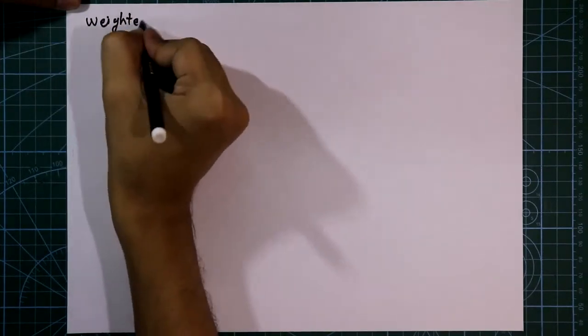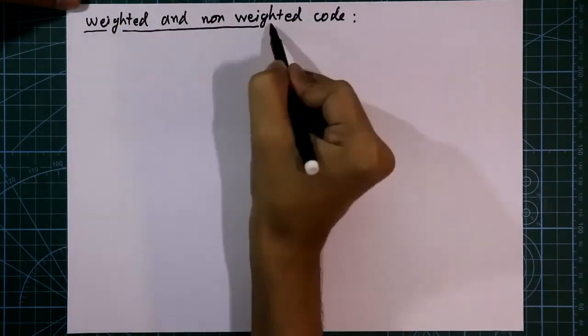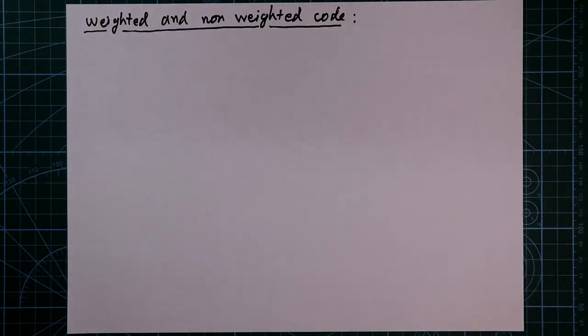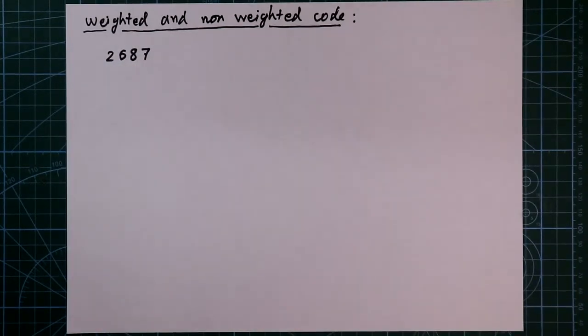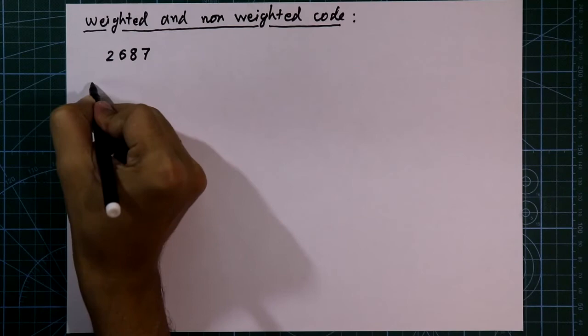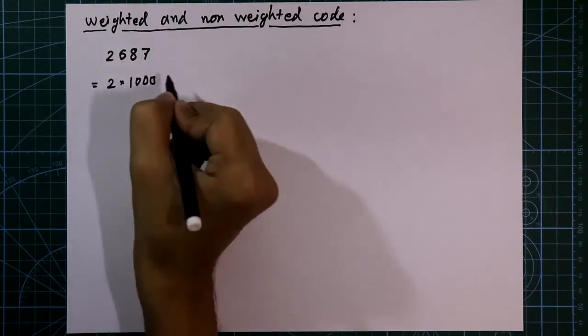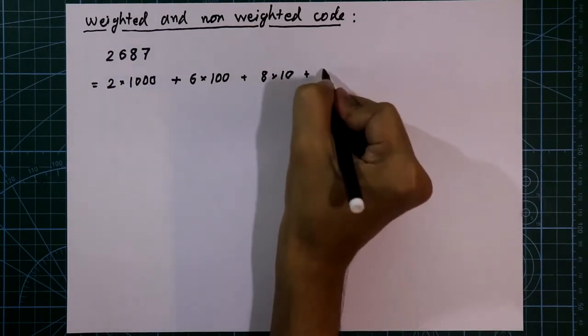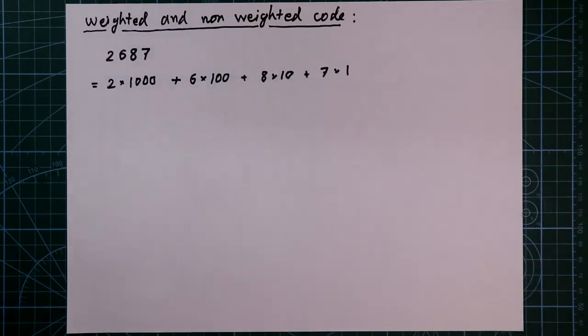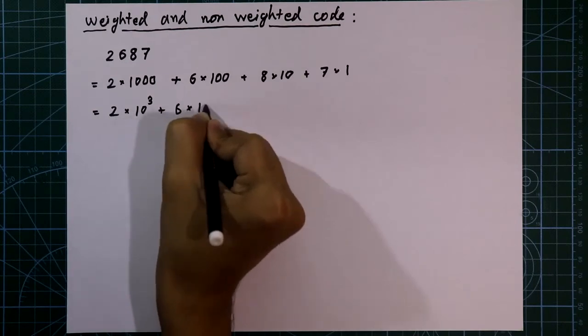Now we will see weighted and non-weighted code. Let's take a decimal number 2687. We can write this number as 2 multiplied by 1000, 6 multiplied by 100, 8 multiplied by 10, and 7 multiplied by 1. Also we can write it as this.